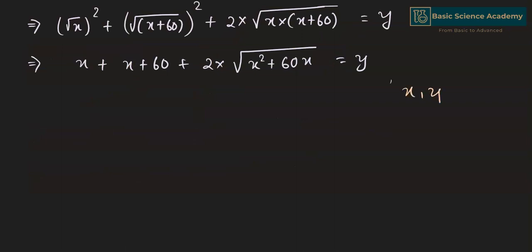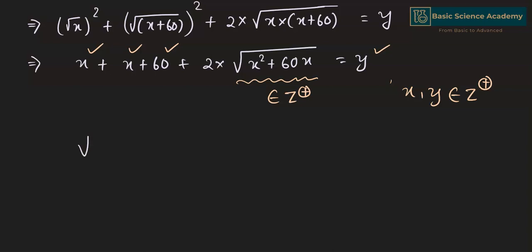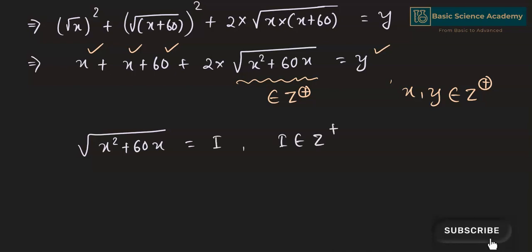Since both x and y are positive integers, each term on the left side is positive, and y² on the right is also positive. Therefore, √(x² + 60x) must also be a positive integer. Let's call it i, where i belongs to the positive integers.